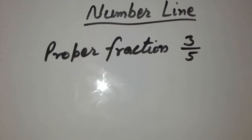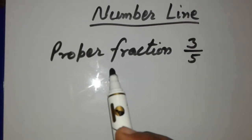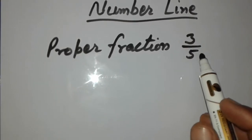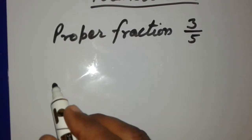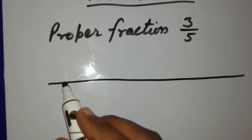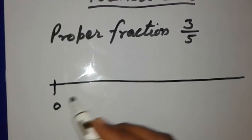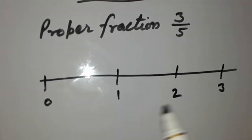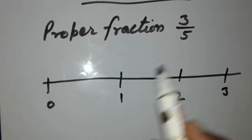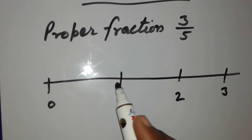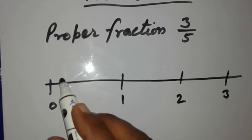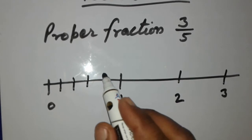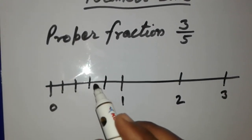Now we will learn how to represent a fraction on a number line. First, we will represent a proper fraction. We take three upon five. We draw a number line and mark points 0, 1, 2, 3, and so on. Because the denominator is 5, we divide the part between 0 and 1 into 5 equal parts: 1, 2, 3, 4, and 5.